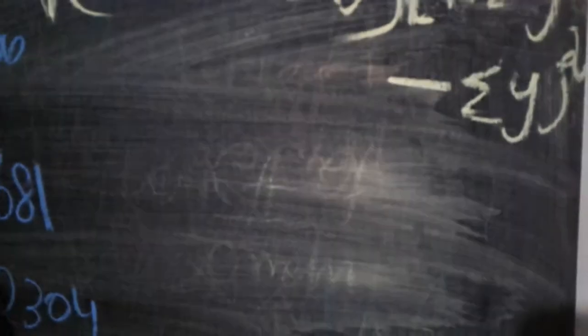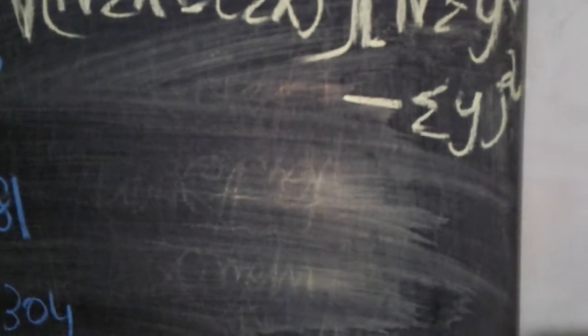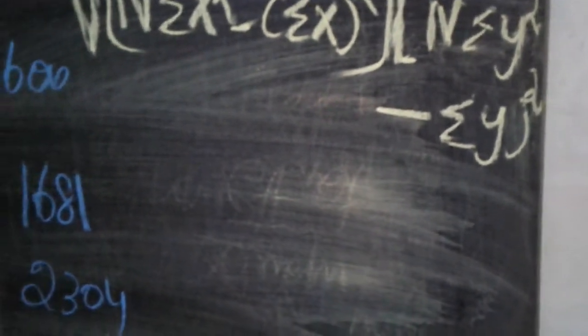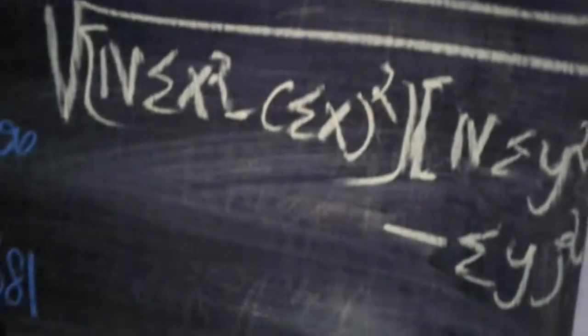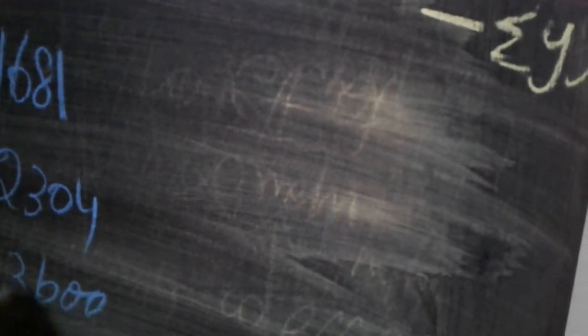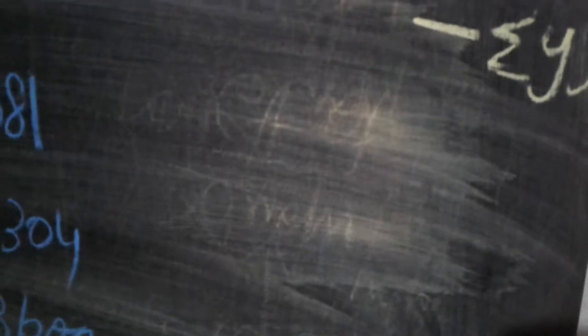Σxy: adding all xy values (400+492+672+900+950) = 3414. Σx²: adding all x² values (100+144+196+225+361) = 1026. Σy²: adding all y² values (1600+1681+2304+3600+2500) = 11685.